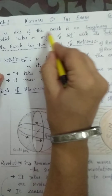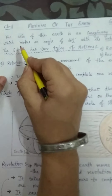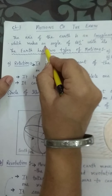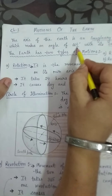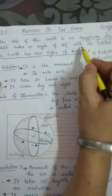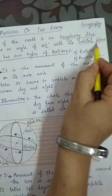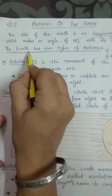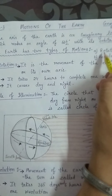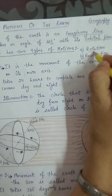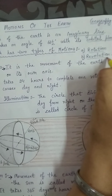So, the axis of the earth is an imaginary line which makes an angle of 66 and a half degrees with its orbital plane. The earth has two types of motions: the first motion is rotation and the second motion is revolution.